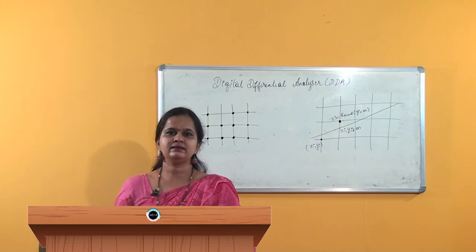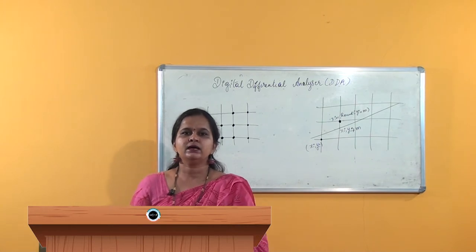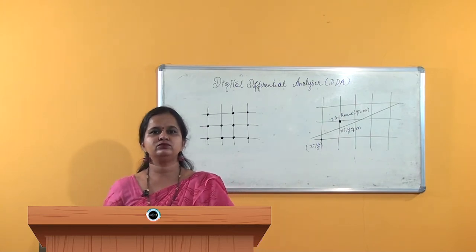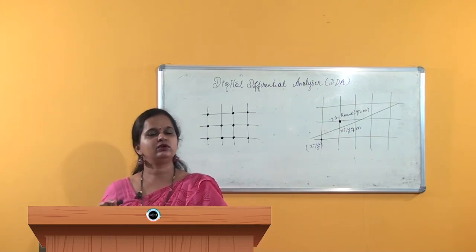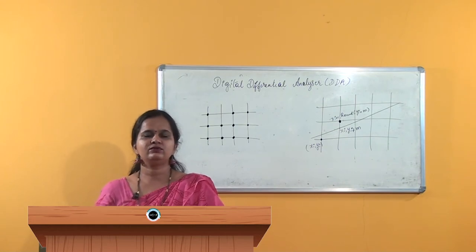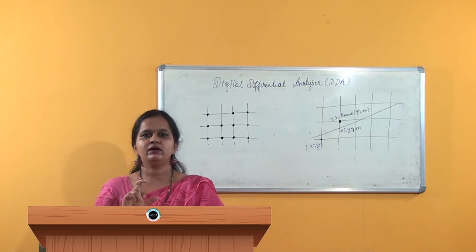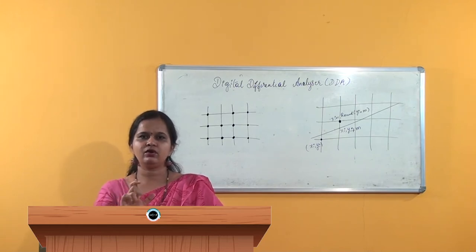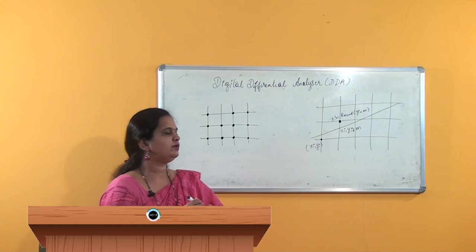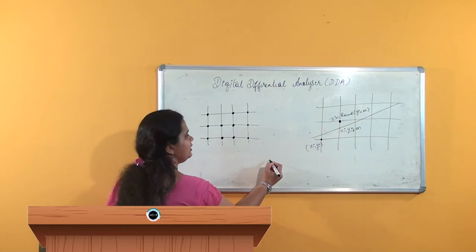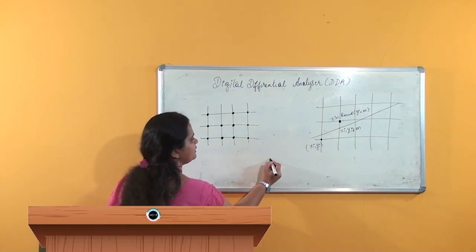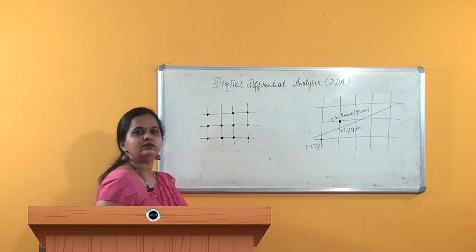Pixel by pixel in the sense: a line is formed by just dots and dots and dots. A line is not a full line here — it is drawn with the help of a combination of dots drawn one after the other. Exactly like putting the dots one after the other, this forms a line for us.